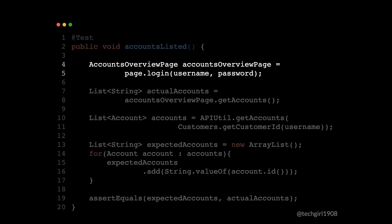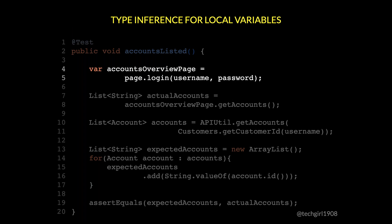We're going to start with the declaration of the accounts overview page. As you can see, we're following Java conventions and using good names for both the class and the object. However, many times these two names are actually the same thing, which is redundant and makes for a lot of typing. In Java 10, type inference for local variables was introduced. Instead of explicitly declaring the variable's type, we can use the keyword var, and Java will infer the type based on what is being assigned to it. This is my favorite new feature in Java, because in automation code we always have these long class names for our page object models — and now we no longer need to type those out.